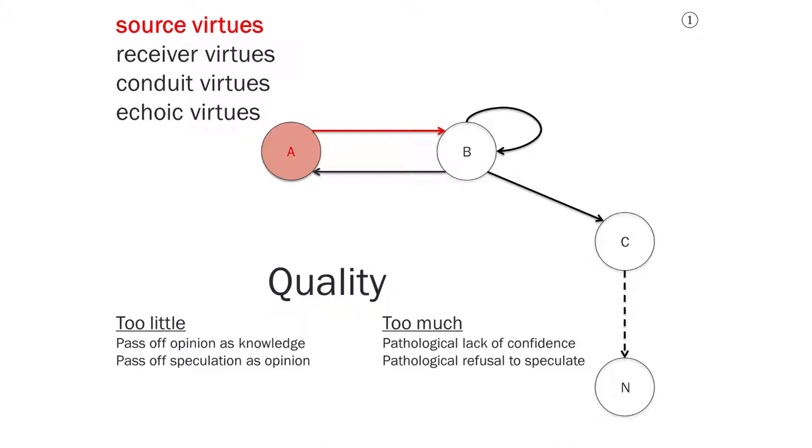The disposition to adhere to the maxim of quality can also be thought of in terms of the Aristotelian doctrine of the mean. So someone can go too far in one direction or the other. So in the direction of excess, someone might be pathologically lacking in confidence. So even though they know something, they might be disposed never to say so because they just might be wrong. Or they might be reluctant to speculate because they think that that would be a violation of saying only what you have evidence for. In the other direction, someone might violate the maxim of quality by passing off their opinions as knowledge or by passing off their speculation as their opinions.